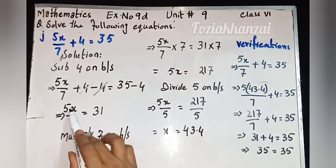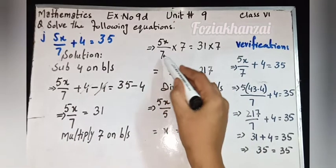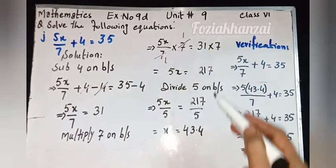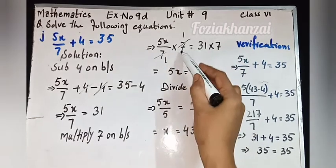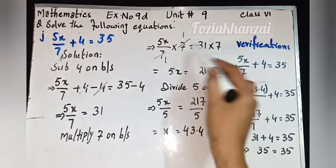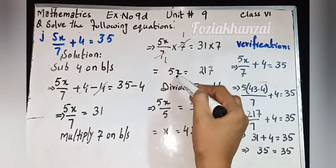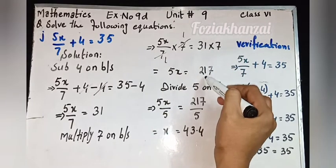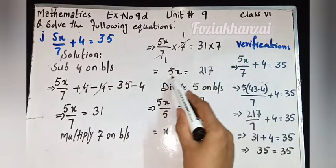Now 5x upon 7 is in fraction form, so division property is given. We apply multiplicative property — multiply 7 on both sides. Before the equal sign and after the equal sign — that's called both sides. 7 multiplied by 7 on both sides, reduce the fraction.